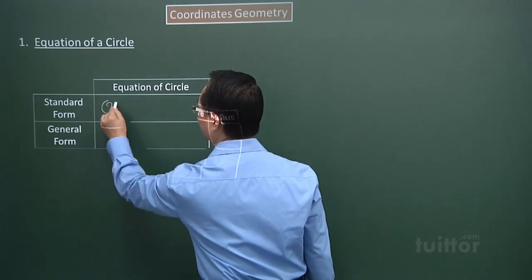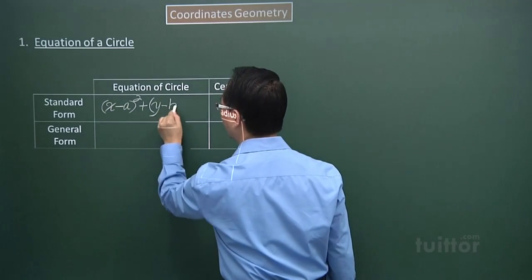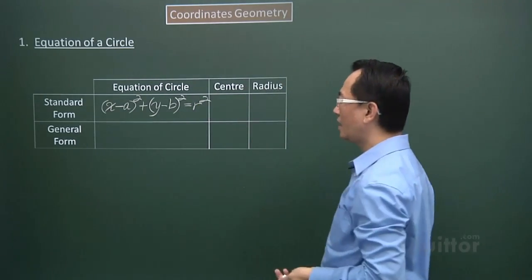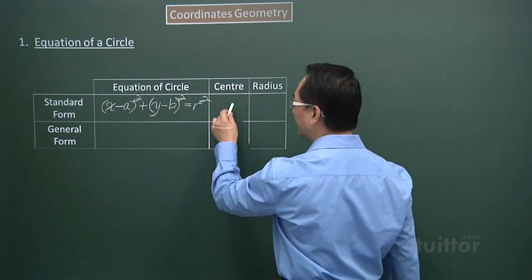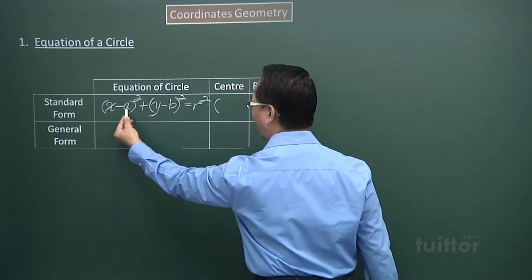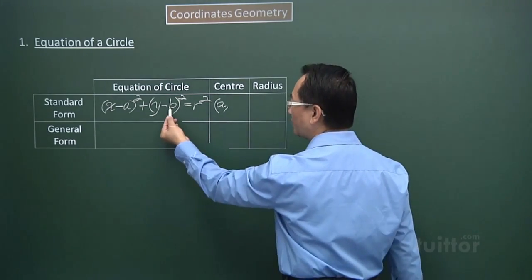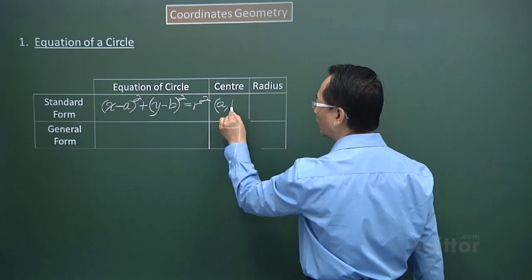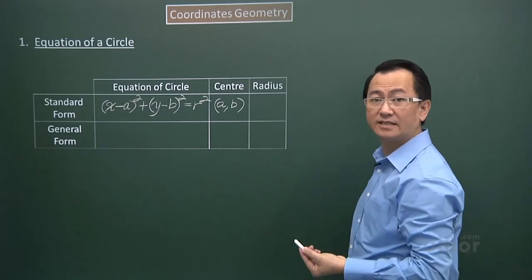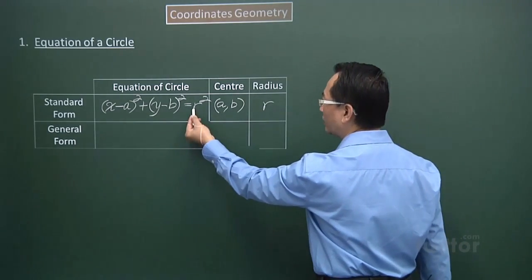The standard form is: (x minus a) squared plus (y minus b) squared equals r squared. The center of the circle will be what you see here. If you have negative a, that will be a for the x-coordinate. And if you have a minus b, then the y-coordinate would be b. So this is the coordinates of the center of the circle. For the radius, it will be r — the value of r is located here.